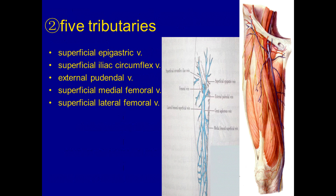The tributaries of the great saphenous vein include the superficial epigastric vein, superficial iliac circumflex vein, external pudendal vein, superficial medial femoral vein, and superficial lateral femoral vein.